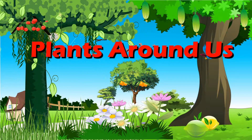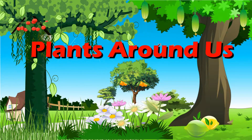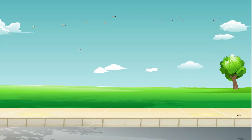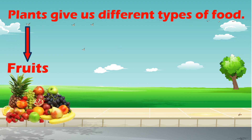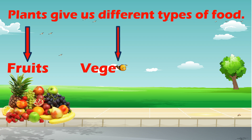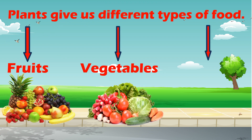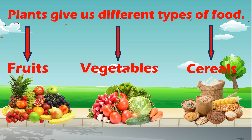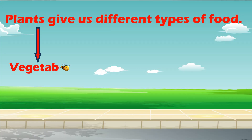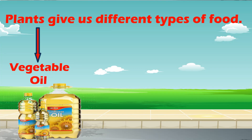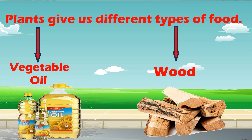Plants around us. Plants give us different types of food like Fruits, Vegetables, Cereals, Vegetable Oil, and Wood.